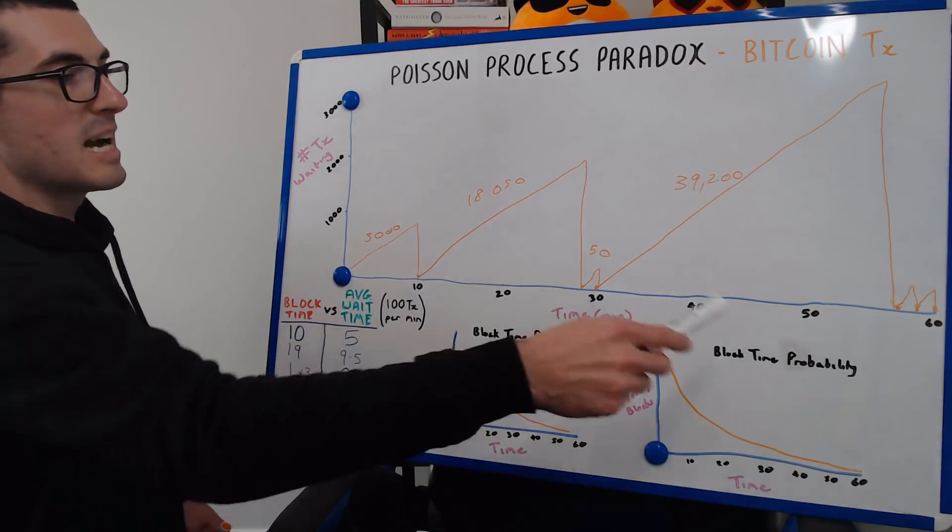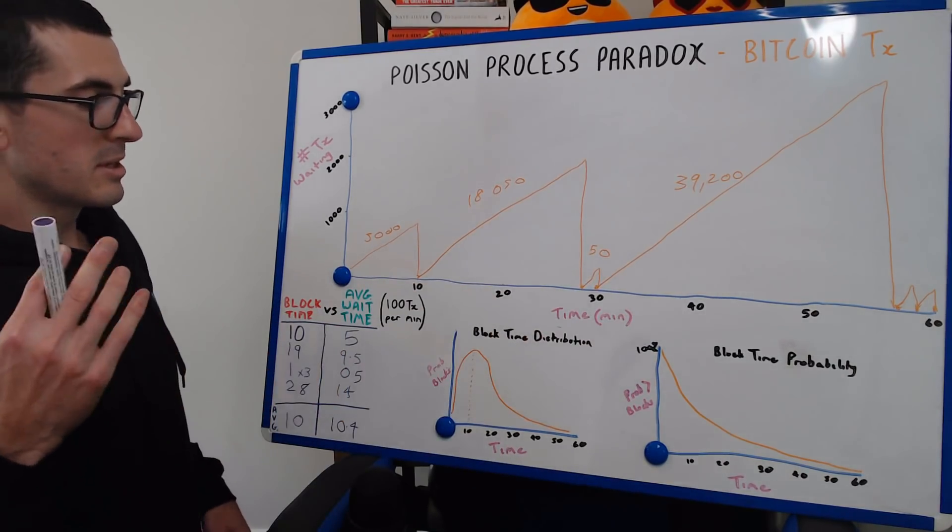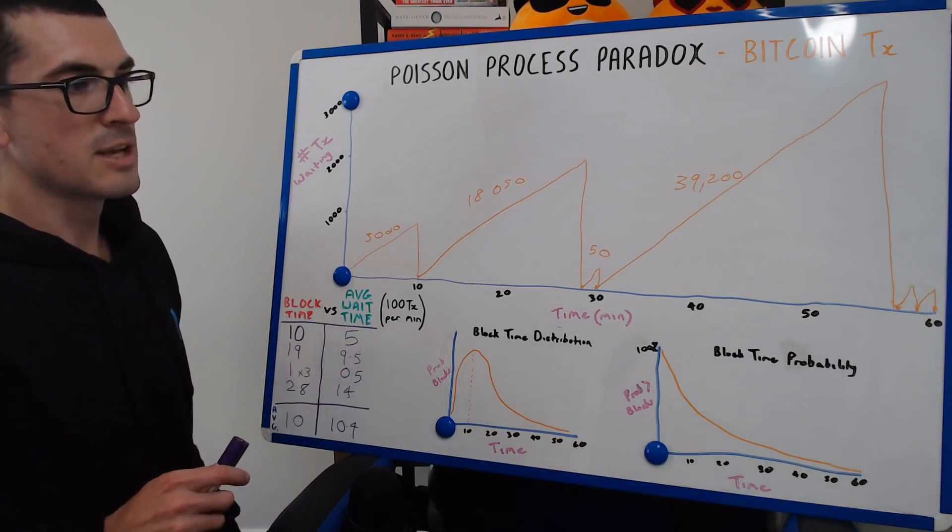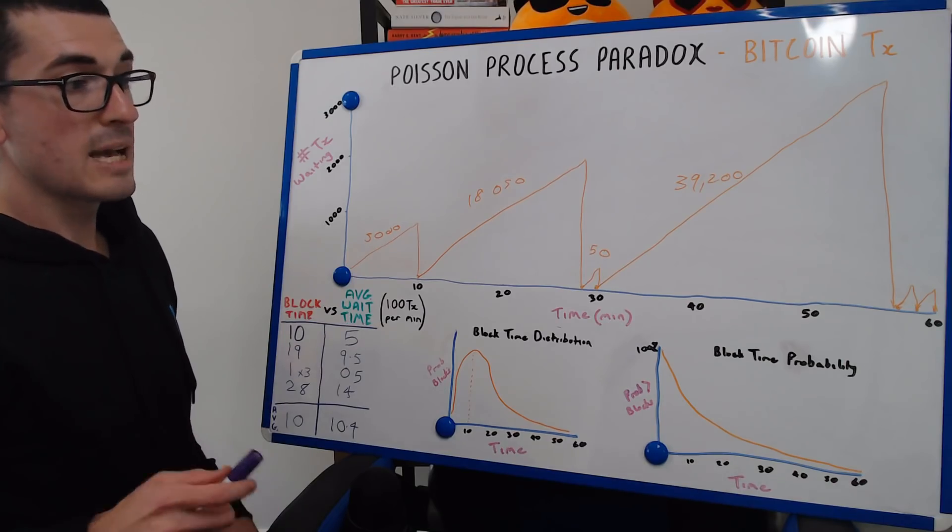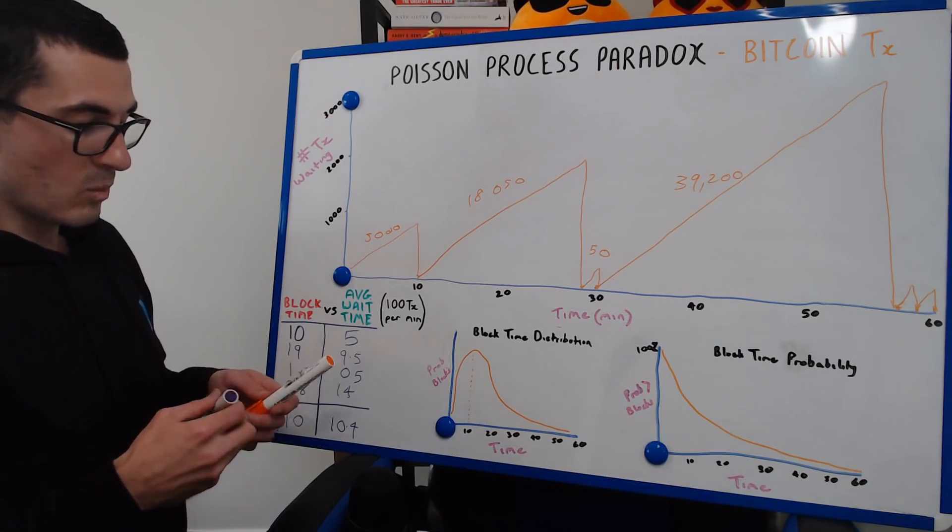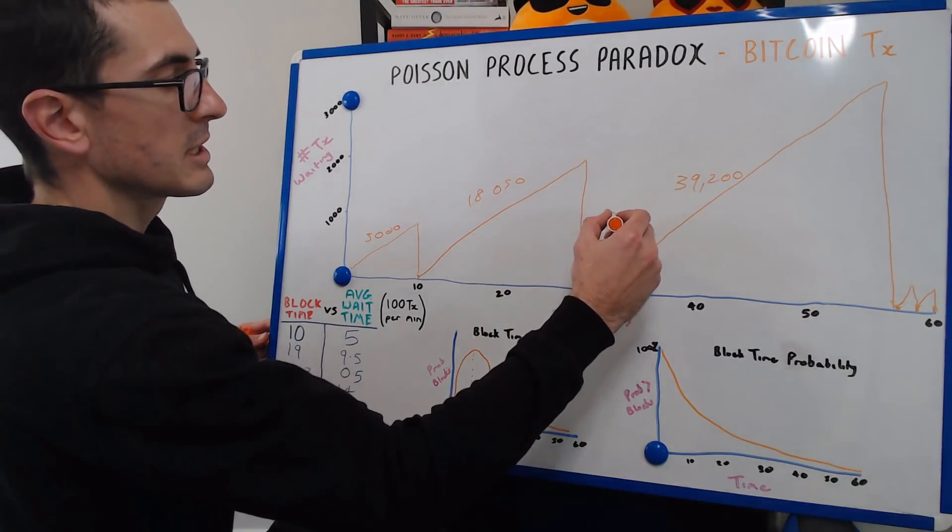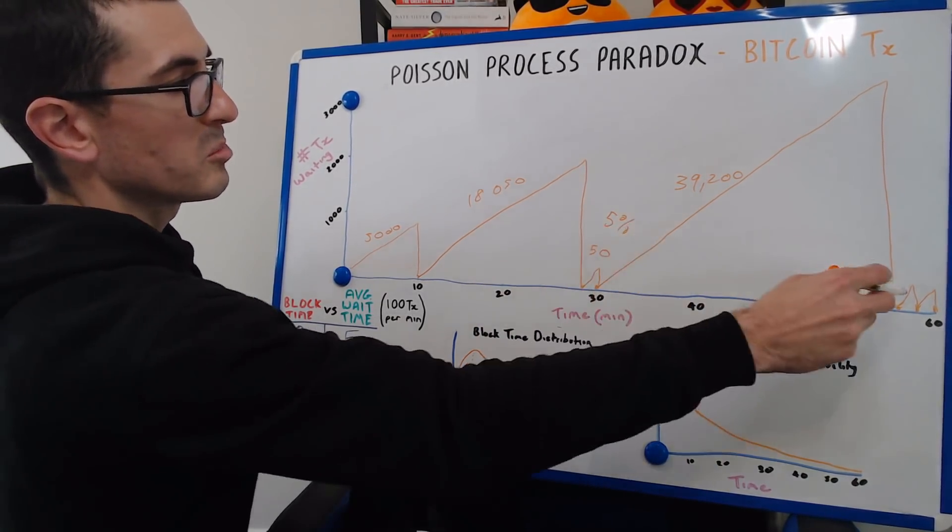So when you went out and asked all the participants that sent transactions during this time, all 6,000 transactions, if you went out and asked them, how long did you have to wait? What we would find is that only 5% of people got included in these short blocks.